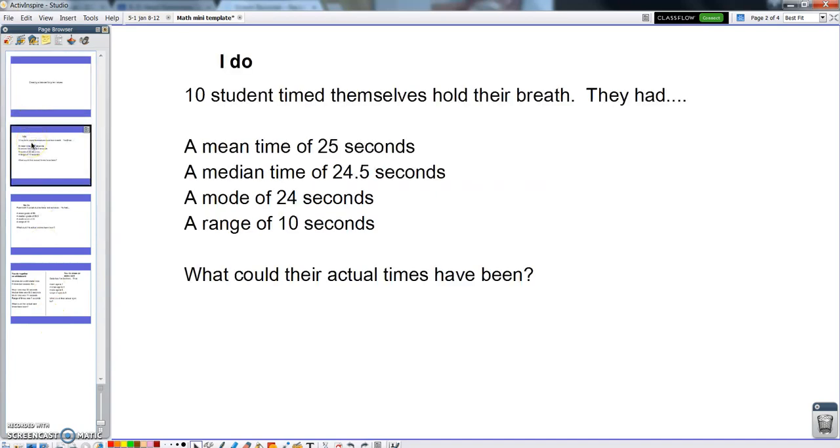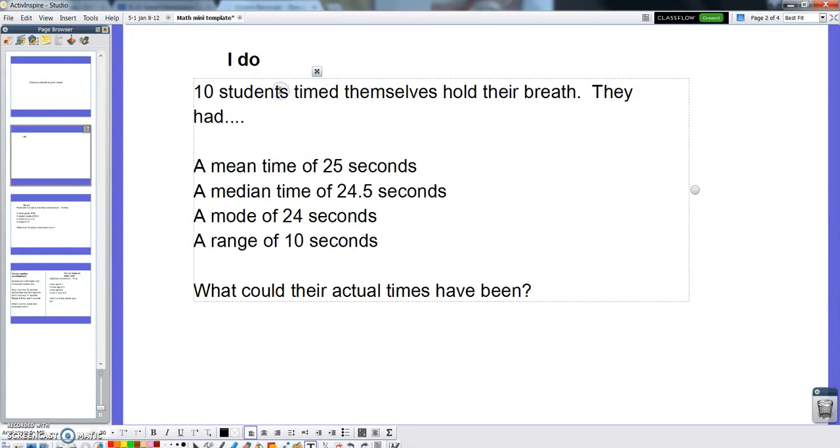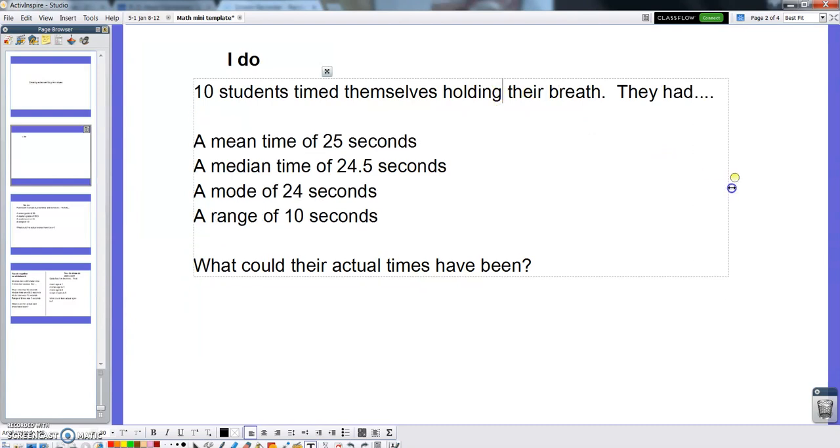So these are a real thinker, but they're kind of fun too. They're like a little puzzle that you've got to solve. So let's try one together. 10 students time themselves holding their breath. They had a mean time of 25 seconds, a median time of 24.5 seconds, a mode time of 24 seconds, and a range of 10 seconds. What could their actual times have been?